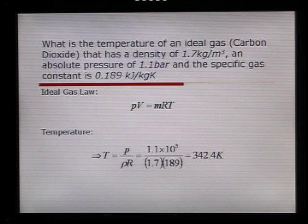The pressure, which is 1.1 bar, is equal to 1.1 by 10 to the 5 pascals in SI units. That is divided by 1.7, which is kg per meter cubed, that's the density, and also divided by 189, which is the ideal gas constant in the correct SI units of joules per kilogram Kelvin. By solving this, we get a temperature of 342.4, and please note that the units here are Kelvin, not degrees Celsius.